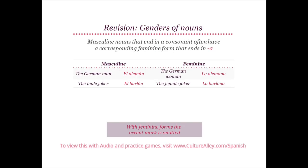Now let's revise the other forms of masculine and feminine nouns. Some masculine nouns end in a consonant. Such masculine nouns that end in a consonant often have a corresponding feminine form that ends in A. For example, the German man translates to el alemán; hence the German woman becomes la alemana. Similarly, the male joker will be el burlón, and the female joker becomes la burlona. Note that with feminine forms, the accent mark is omitted.